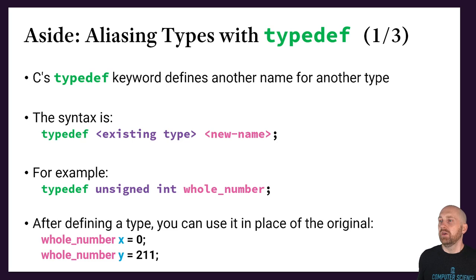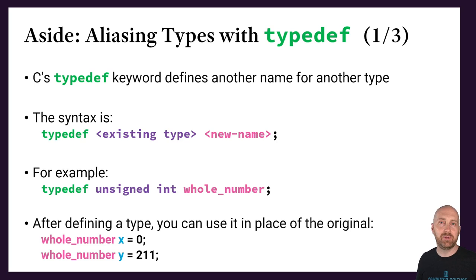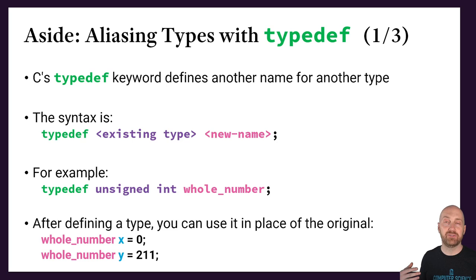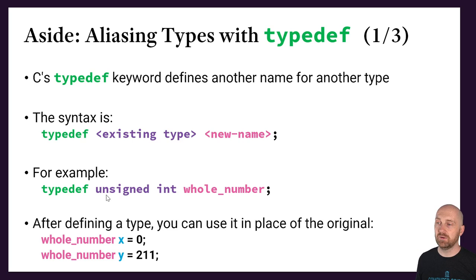Because typing the keyword struct in front of the name of the struct feels verbose and redundant, we tend to use a typedef to avoid having to write struct each time we want to refer to a structure type. We declare an alias for a structure. This is actually happening behind the scenes in stdint.h — when you use things like uint64_t, those are typedefs set up for you in those header files. For example, we could rename unsigned int to whole_number by saying: typedef unsigned int whole_number.